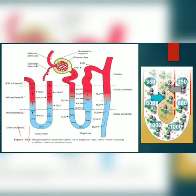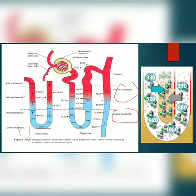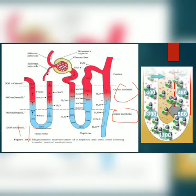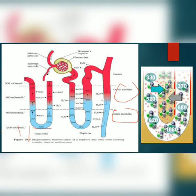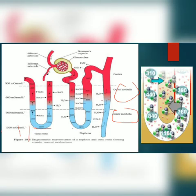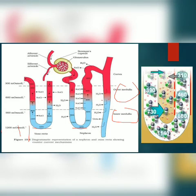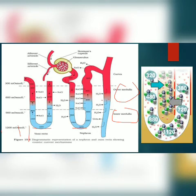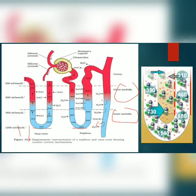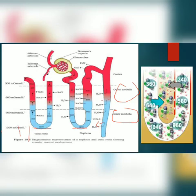In the outer medulla and inner medulla, the osmolarity reaches up to 1200 mOsm in the inner medulla. This mechanism helps to maintain the concentration gradient in the medullary interstitium, which facilitates the easy passage of water from the collecting tubule. When osmolarity increases, water leaves the filtrate from the collecting tubule and enters the interstitial medullary region, concentrating the filtrate or urine present in the collecting duct.